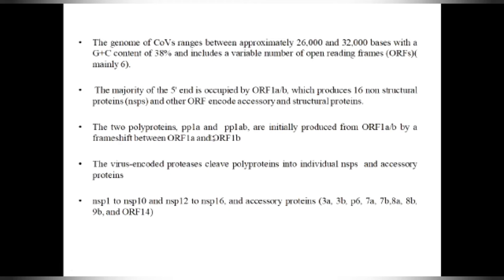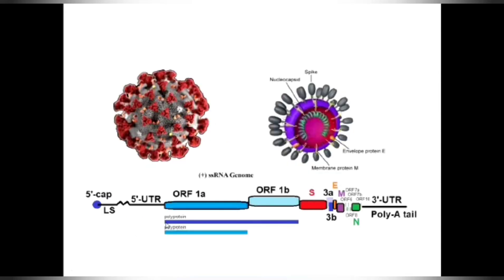Two polyproteins PP1A and PP1B are initially produced from open reading frames 1A and 1B by a frameshift between ORF1A and 1B. The virus-encoded proteases cleave these polyproteins into individual non-structural proteins (NSP1 to NSP10, NSP12 to NSP16) and accessory proteins. This structure is very important and may be presented as a pictorial question in your exams.